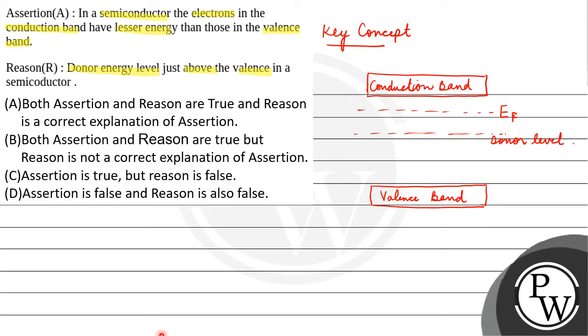The first thing is to talk about Assertion. We have said that electrons in the conduction band are less as compared to the electrons in the valence band.